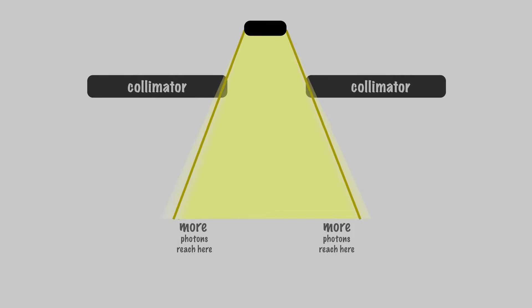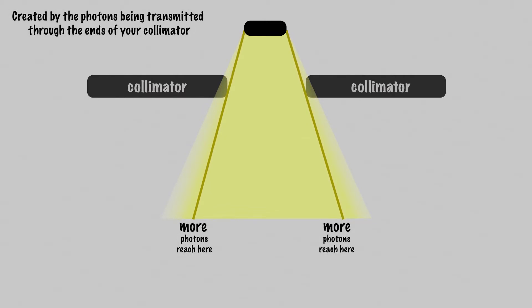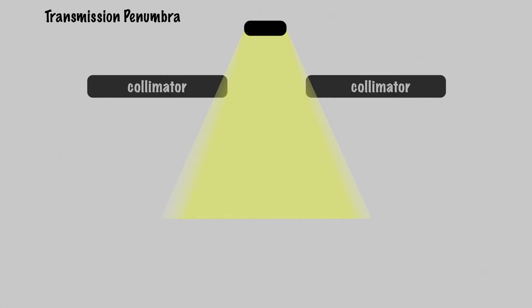The parts of the beam that pass through less of the collimator are blocked less and attenuated less, which means more photons go through. This effect is called transmission penumbra because it's created by the dose being transmitted through the ends of your collimator.